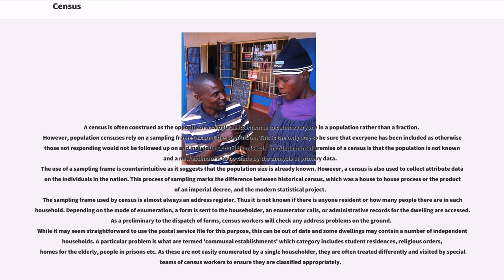However, a census is also used to collect attribute data on individuals in the nation. This process of sampling marks the difference between historical census, which was a house-to-house process or the product of an imperial decree, and the modern statistical project. The sampling frame used by census is almost always an address register; thus it is not known if there is any resident or how many people there are in each household.